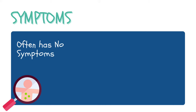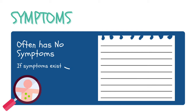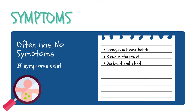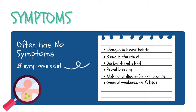Patients with colorectal cancer may have no symptoms at all. This is why screening and early detection are so important. If symptoms exist, they usually include changes in bowel habits such as diarrhea or constipation, blood in the stool or dark-colored stool, rectal bleeding, abdominal discomfort or cramps, general weakness or fatigue, and unexplained weight loss.